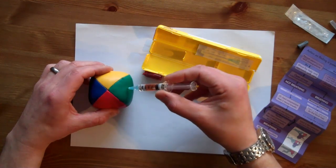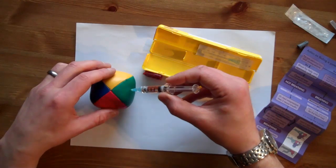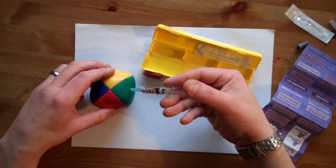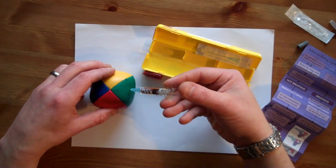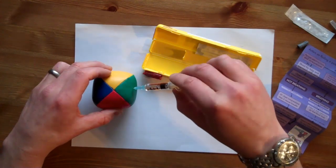We can rotate the barrel to find these black marked lines which each one indicates a dose. We then push down to the first black line and that's administered 0.4 ml of naloxone into the casualty.